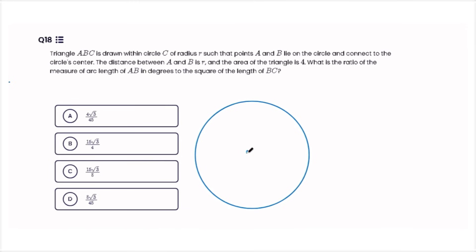First, let's draw the circle, and then let's label our point C as the center, point B that lies on the circle, and point A. Next, let's draw the lines connecting A and B to the center, and the length of AB. So it tells us that the length between AB is R, so we know that this is an equilateral triangle since all the sides are equal to each other. And they also give us the area, which is 4. This will make solving for the radius much easier.